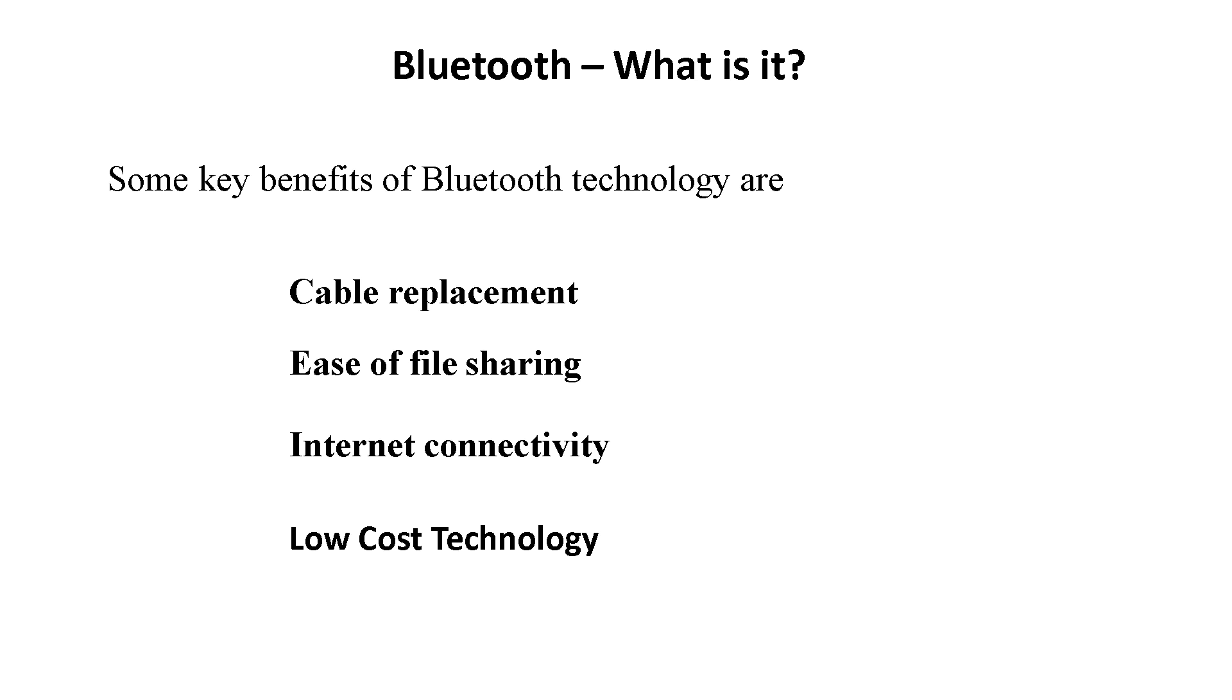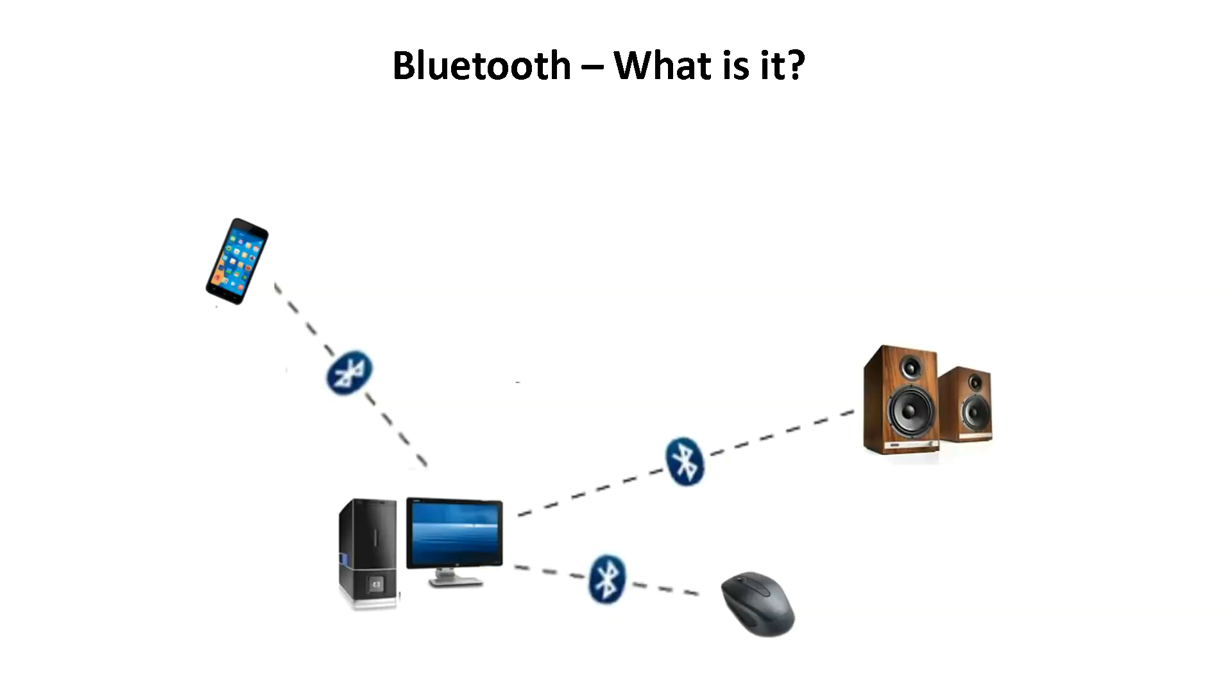Now whenever Bluetooth devices come within range of one another, an electronic conversation determines whether they have data to share or whether one needs to control the other. There is no need for the user to press any button or give any command. The electronic conversation occurs automatically and the devices form a network once the conversation has initiated.